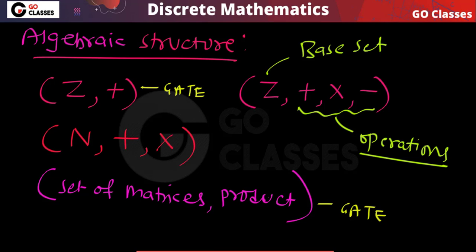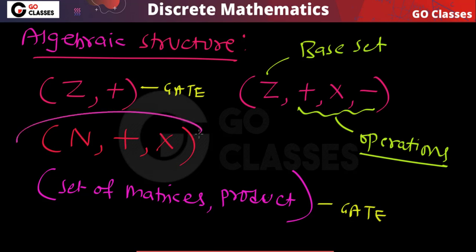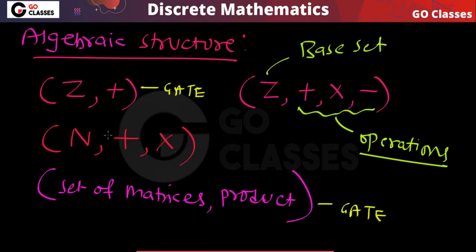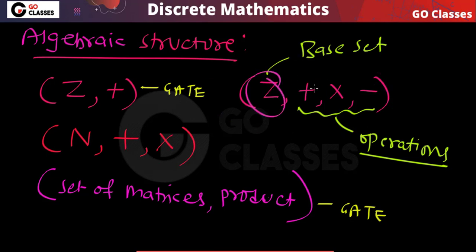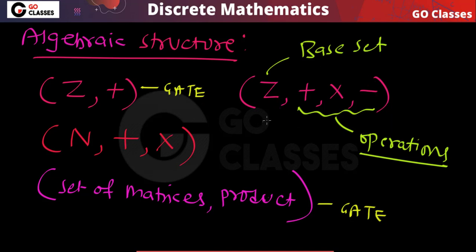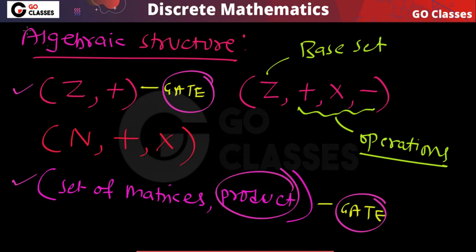In the GATE syllabus, we only have those algebraic structures with a single operation. So structures with two operations or three operations are not in the GATE syllabus. In the GATE syllabus we only have algebraic structures with a single operation.